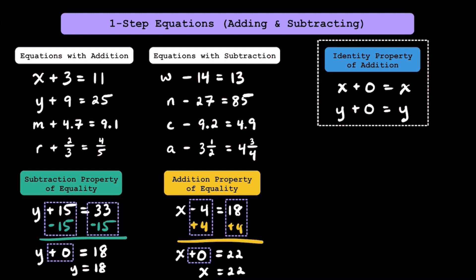That brings me to the third and final property I'll be discussing in this video: the identity property of addition. I've already used it twice in two of the examples. While the identity property of multiplication states that whenever you multiply any value by 1 it stays the same, the identity property of addition states that whenever you add 0, you get the same value. So x plus 0 is just equal to x, and y plus 0 is just equal to y. It's important to understand how to apply it when solving one-step equations involving addition and subtraction.